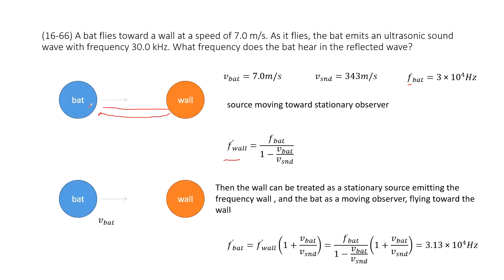And then, this wave will return to the bat. So, in this case, we can consider this wave come out from the wall. So, wall becomes the source, and the bat becomes observer.